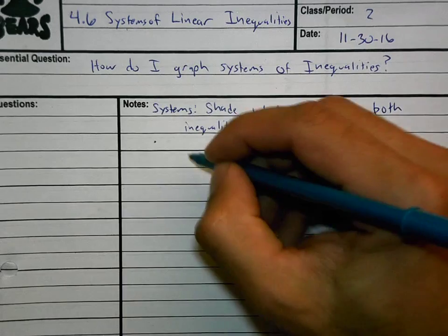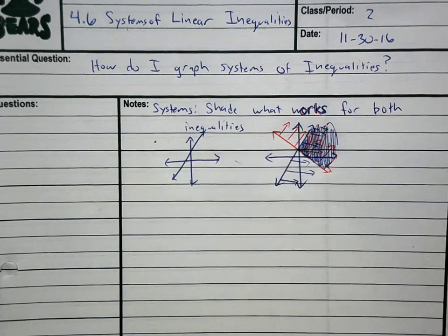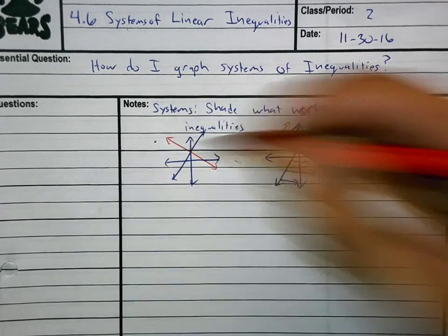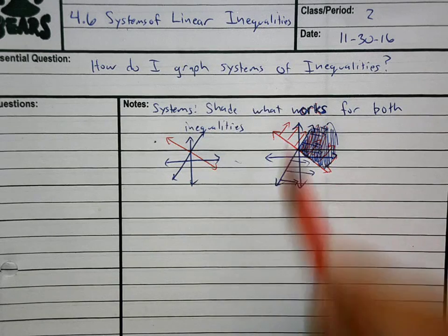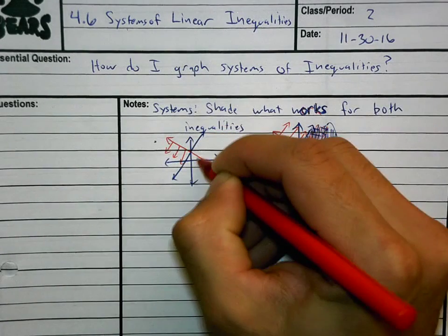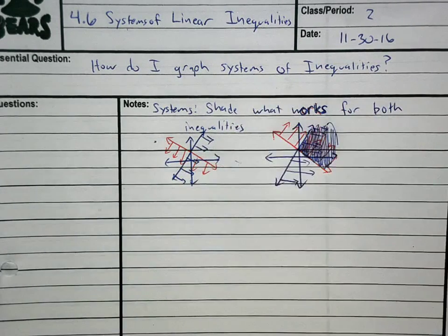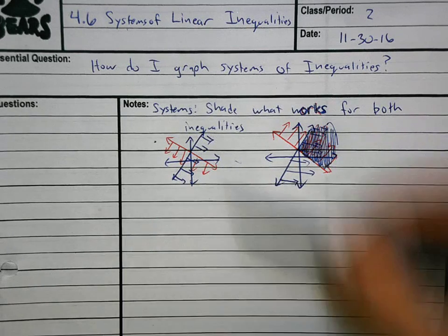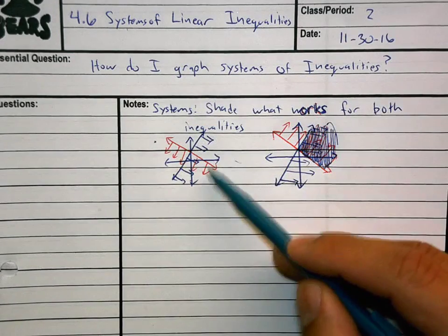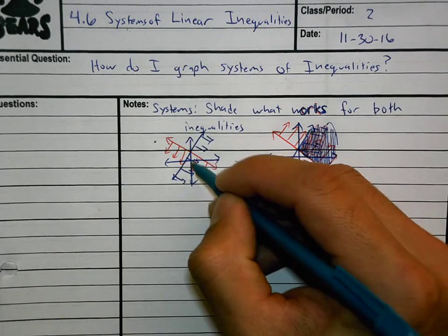I'm going to do one more quick example and I'm going to draw the same two graphs that we have, the two lines. Earlier I shaded to the right of the blue line and above the red line. Now I'm going to shade below the red line and I'm going to shade still to the right of the blue line. I'm only going to change one thing. Depending on which side of the lines you're shading, you have to do what works for both lines. Meaning if I'm on the right side of the blue line and I'm below the red line, what works for both is where the red lines and the blue lines cross each other. It's not the top right anymore, it is now this part is what I would shade.